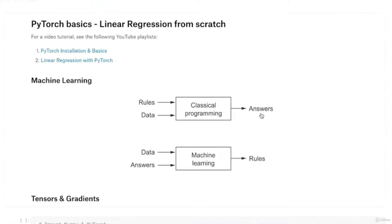In machine learning, we know what the input is and we know what the output is going to be, and we expect the computer to figure out an algorithm or rule or program to solve the problem. We take a lot of input training data where we have inputs and outputs, feed them into the machine learning model, and it comes back with a trained model we can use to get outputs for new inputs. That's a basic introduction to machine learning.